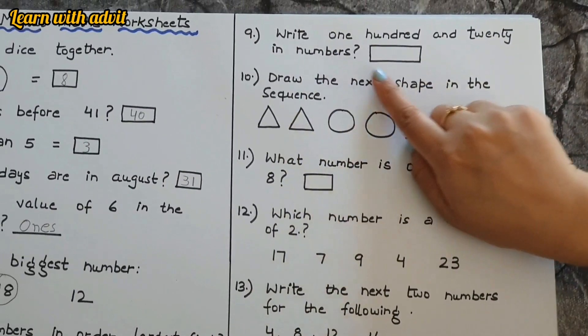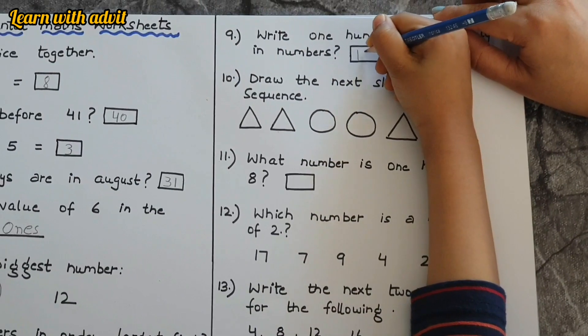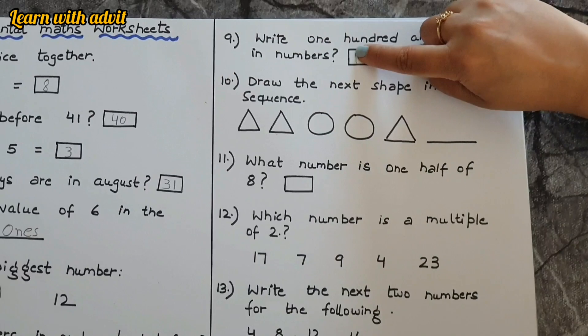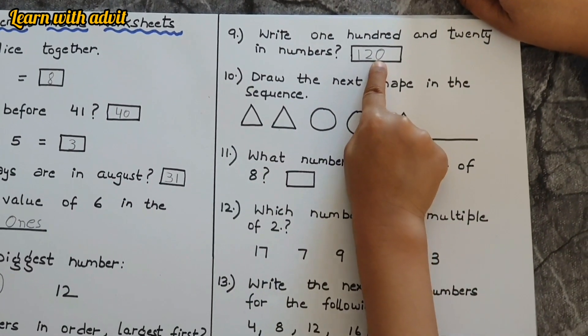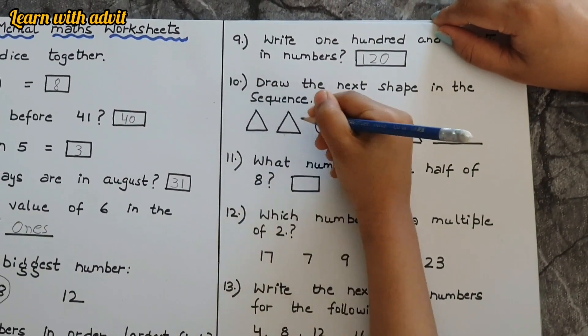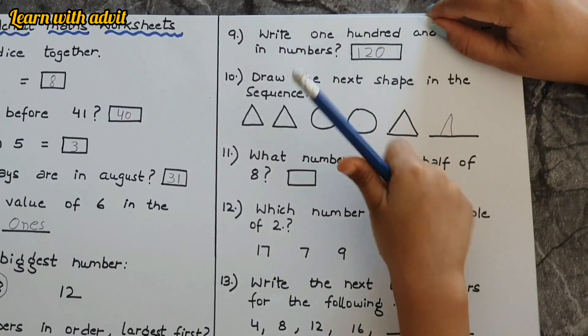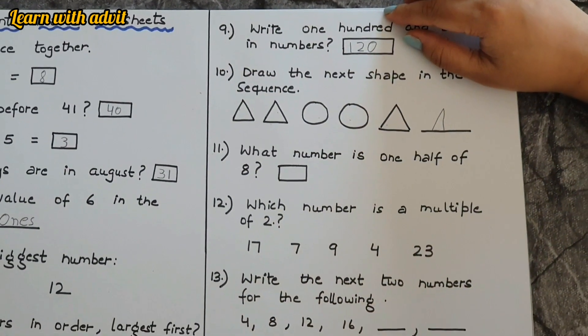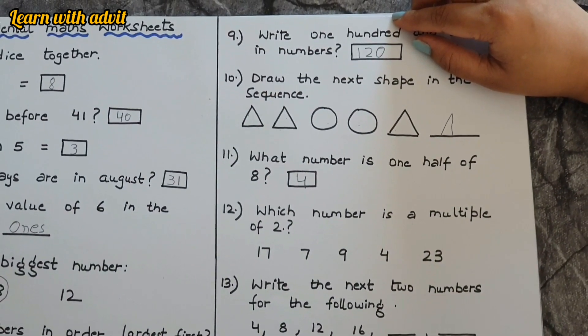Write 120 in numbers: one, two, and zero. Once, tens, hundreds. This is hundreds place, tens place, and ones place. Very good. Draw the next shape in the sequence. Triangle, triangle, circle, circle, triangle, triangle, triangle, because there's another triangle over here. What number is one half of eight? Four, very good.